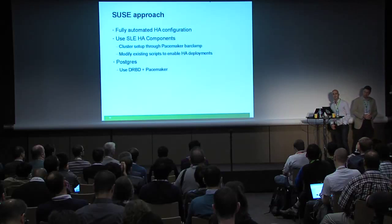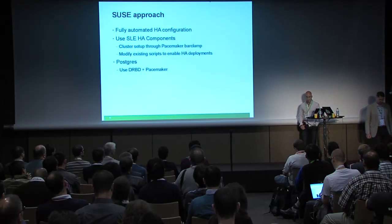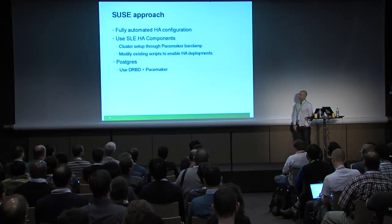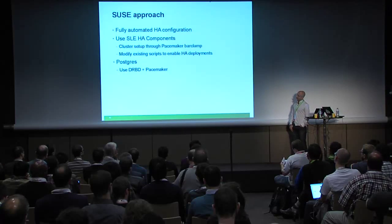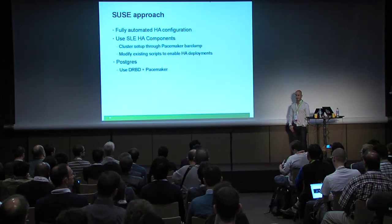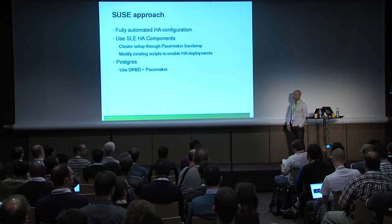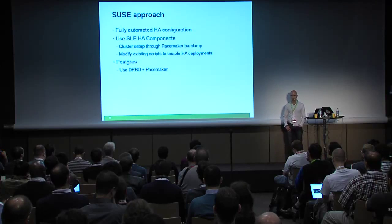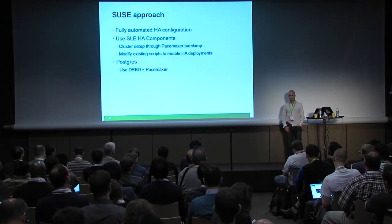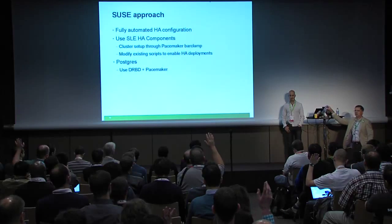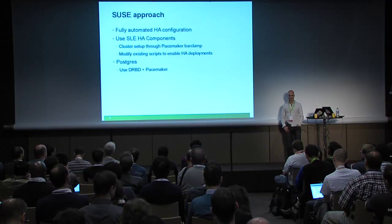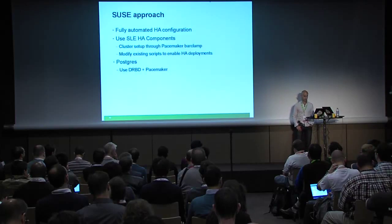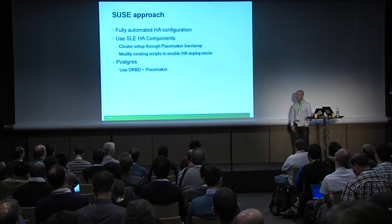To go into a bit more detail about the approach we took - we could use this as a generic set of best practices for implementing high availability because I think it's best practice across the board, and other vendors have gone down a similar route. The first best practice is to fully automate your HA configuration. Hands up: who has ever configured a cluster manually? Of those people, who enjoyed it? That demonstrates my point. Setting up a cluster can be challenging, so having something that automates it and is well-tested is important.